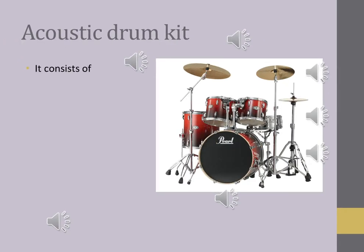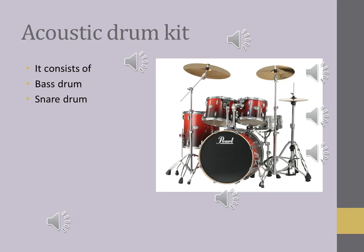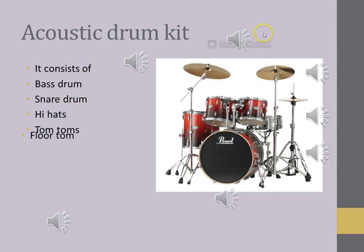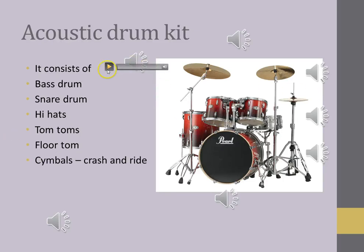The acoustic drum kit consists of a bass drum, a snare drum which can be played with brushes or with sticks, hi-hats which are two cymbals joined together, tom-toms which are the two drums at the top as well as the floor toms, and then there are the cymbals — the crash and the ride cymbal.